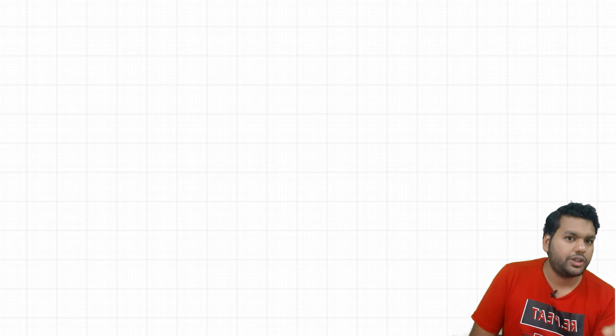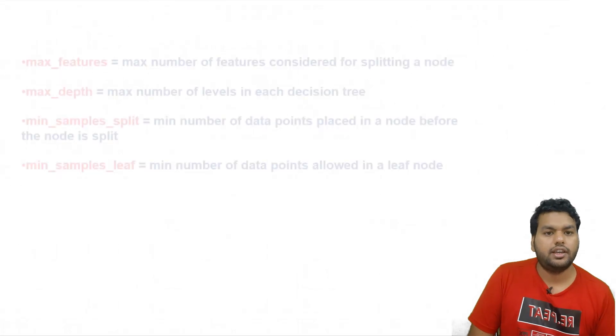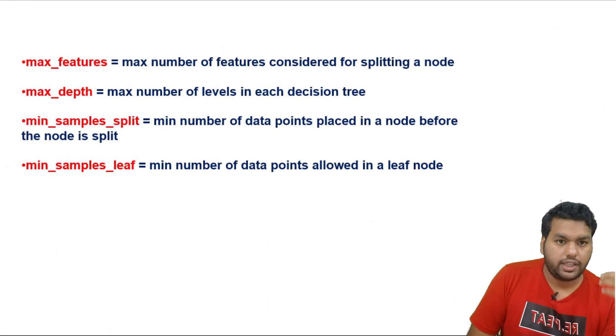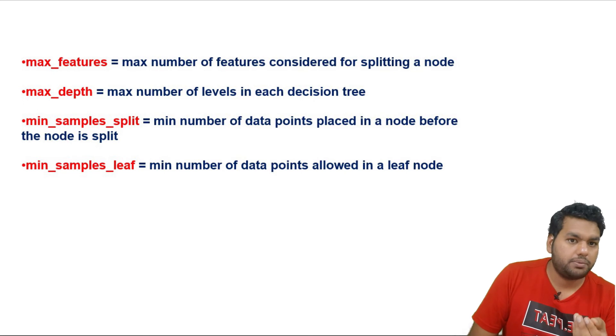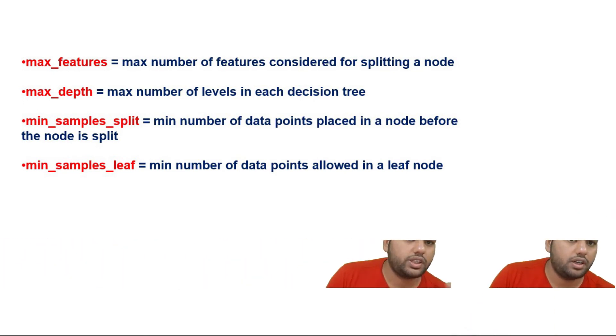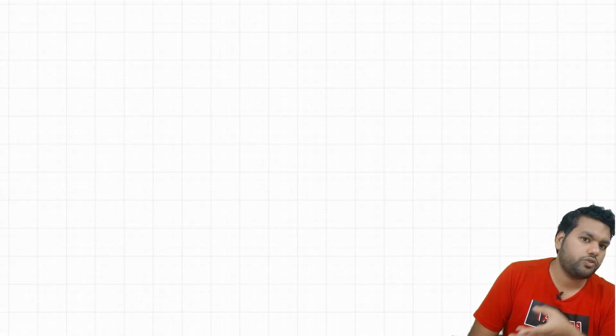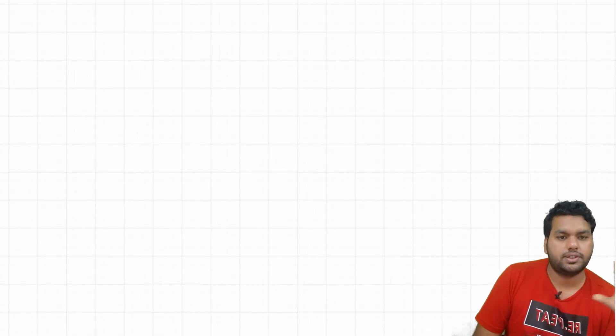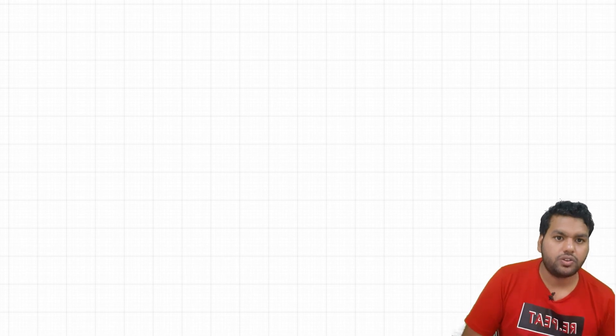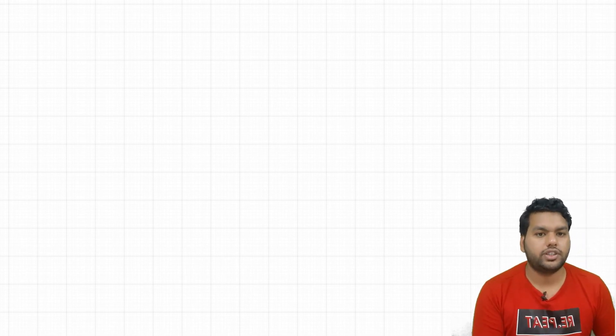Since random forest uses only decision trees, the hyperparameters that help tune a decision tree also apply to random forest. These include the maximum depth of the tree and the minimum number of samples in a leaf node. So hyperparameters for the decision tree also work well for the random forest. We want a higher number of base learners to improve performance.